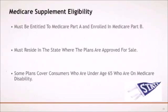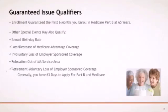There are Medicare Supplement Policies for consumers who are under the age of 65 and have a Medicare disability. Each insurance company has its own guaranteed-issue qualifiers, though some qualifiers are identical from company to company. When you first enroll into Medicare Part A and Part B at age 65, within the first six months, you are guaranteed to get a Medicare Supplement Policy regardless of health issues.